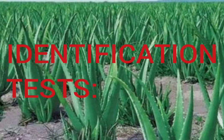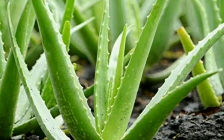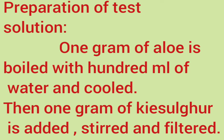Now we can study the identification tests. Preparation of test solution: 1 gram of Aloe is boiled with 100 ml of water and cooled. Then 1 gram of kieselguhr is added, stirred, and filtered. This filtrate is used for the following tests.